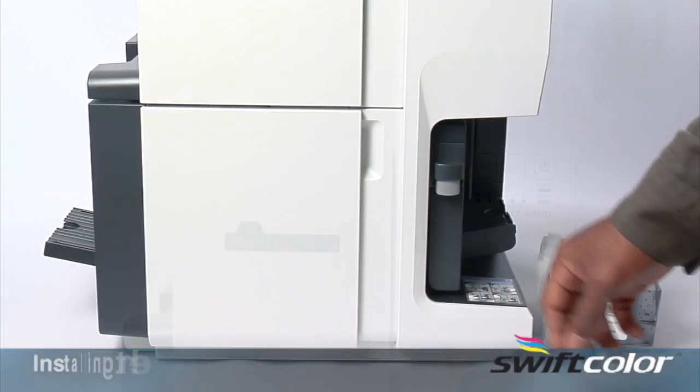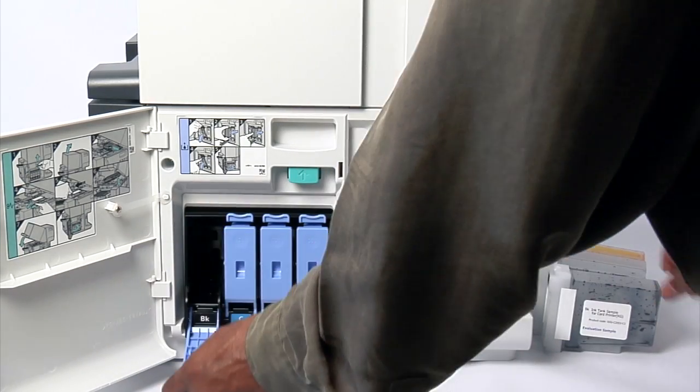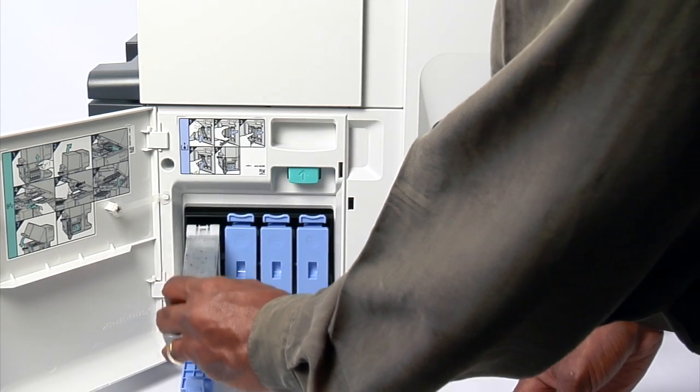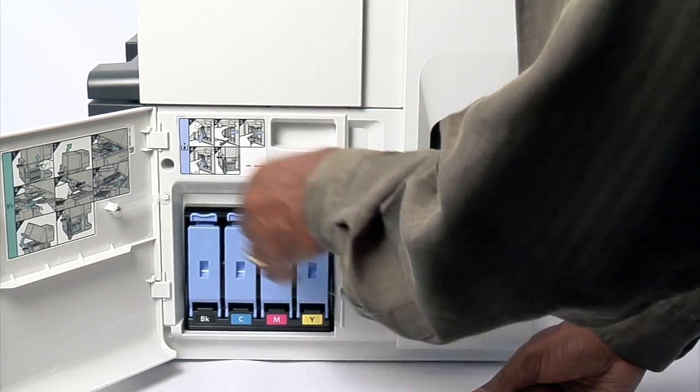Installing starter inks. Once the printhead is installed, you can install the starter ink tanks. Open the ink tank door. Begin installing the four ink tanks. The ink tank slots are color-coded to each corresponding ink tank. Close the ink tank door.